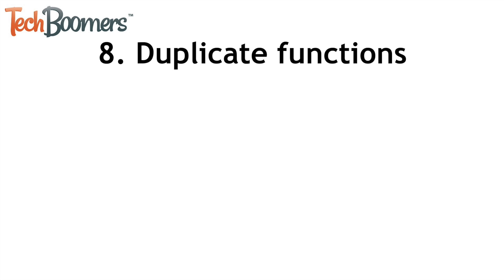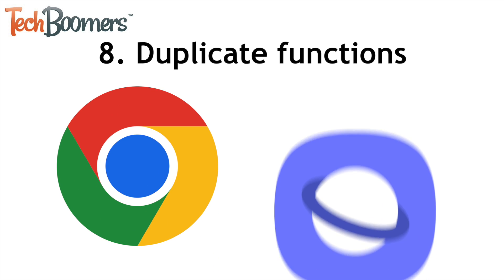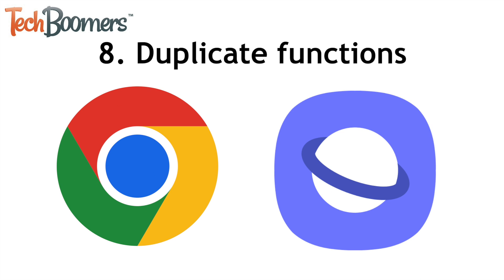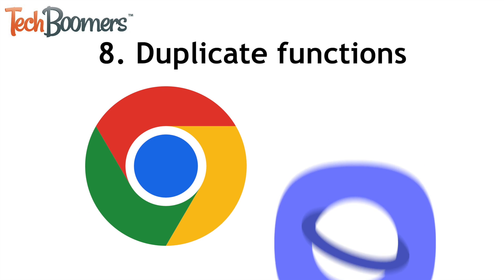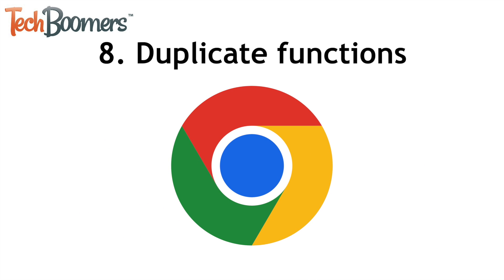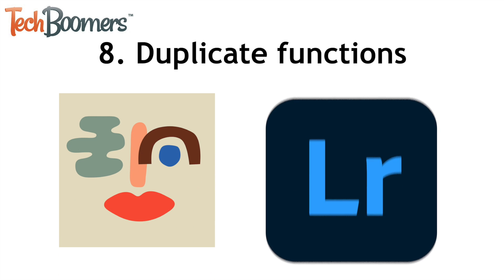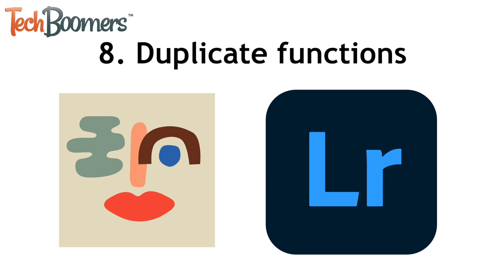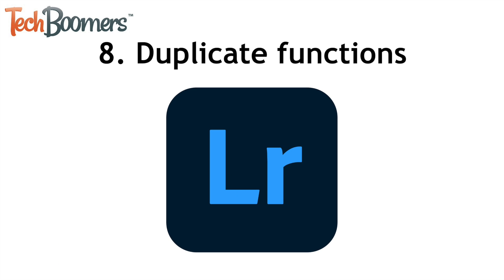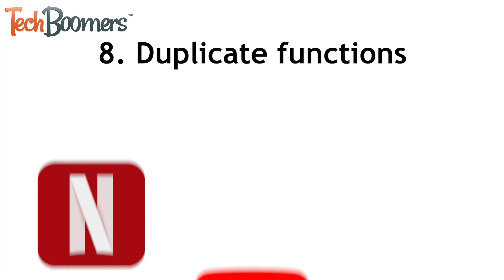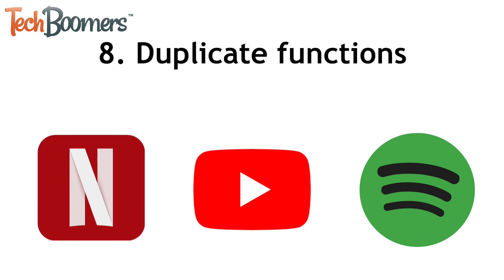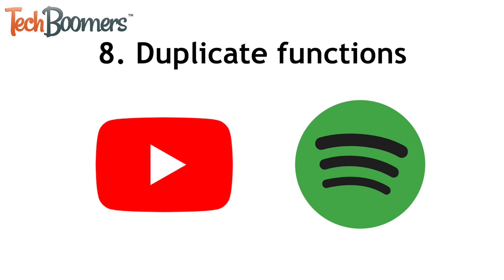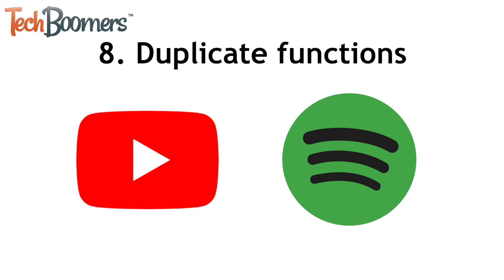Another type of app you can get rid of are apps that serve the same functions as other apps you use instead. For example, if you have more than one web browser app, you can delete all but the one you use the most. Maybe you have multiple photo or video editing apps but only really use one, or multiple media streaming apps that you don't use. Pair down your selection of apps by removing those that serve the same purpose as another app you use more frequently.